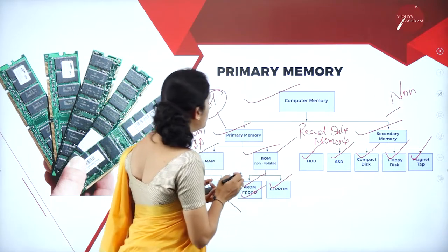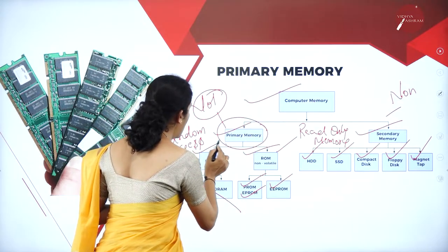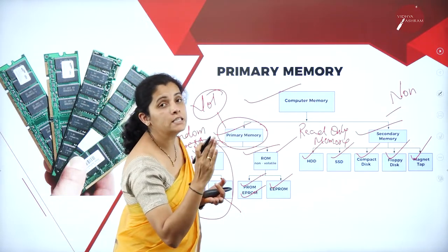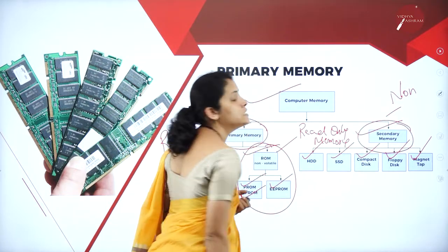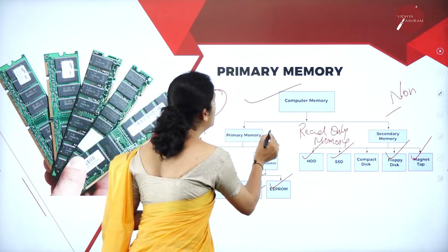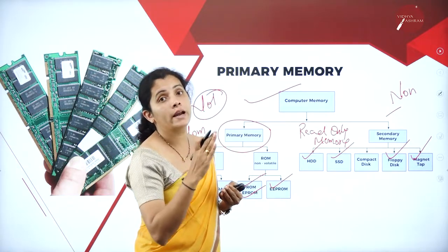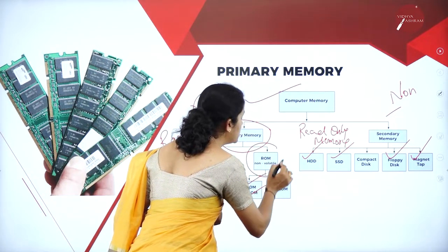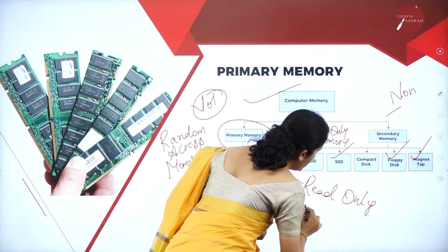In today's session, I am going to deal with only primary memory and RAM — that is, random access memory. In my next session, I am going to deal with ROM and secondary memory. Today I will discuss what is primary memory, its uses, its advantages, and read-only memory.